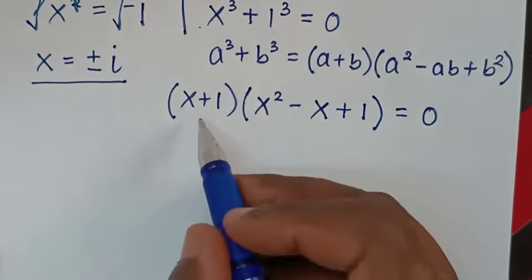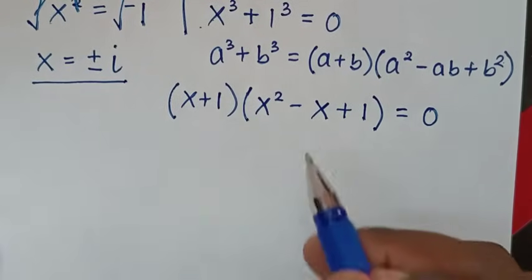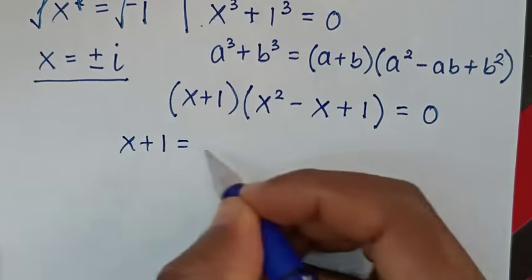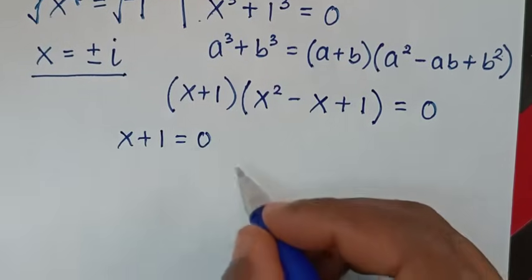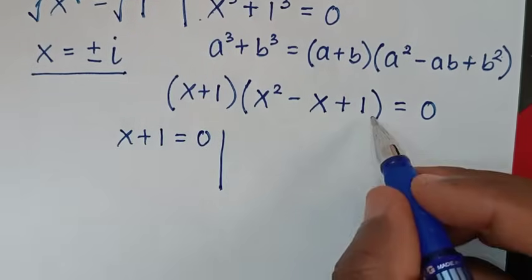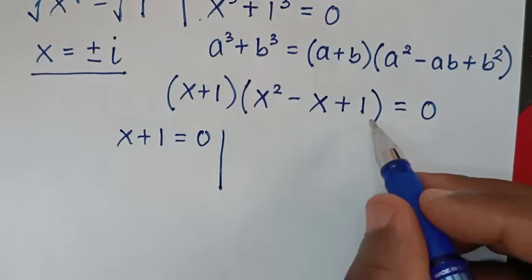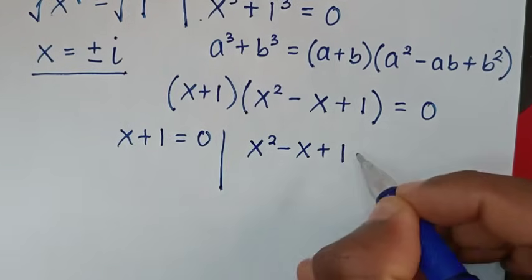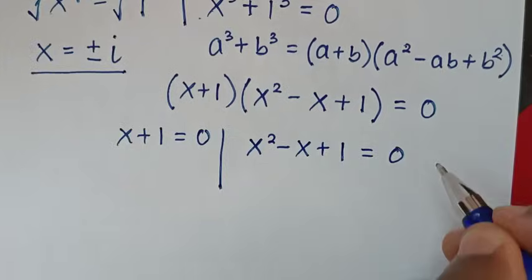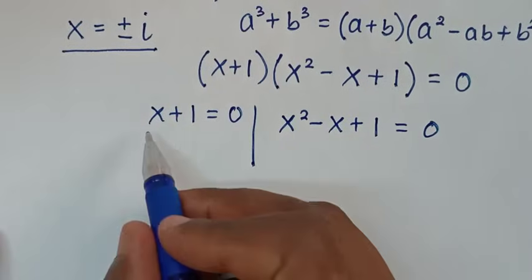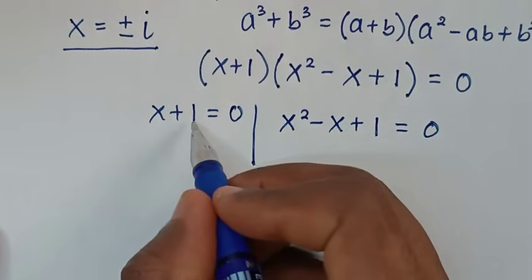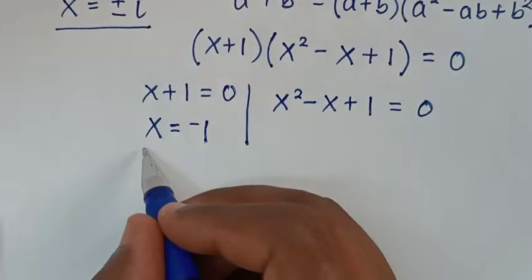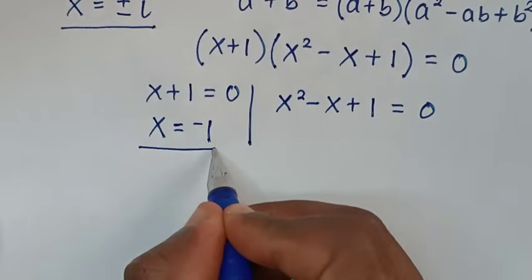Then in the next step from here we have two solutions. The first solution is x plus 1 is equal to 0, and the second solution is the quadratic equation x squared minus x plus 1 is equal to 0. From the first equation we take 1 to the other side to get x is equal to negative 1. So here we already get another value of x which is negative 1.